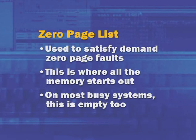On most busy systems, the zero page list is totally empty because pages on it eventually make their way into working sets of processes and the standby list. If you run your system for a while, all pages will be pulled off the zero page list to serve a more useful purpose in a working set or on the standby list.